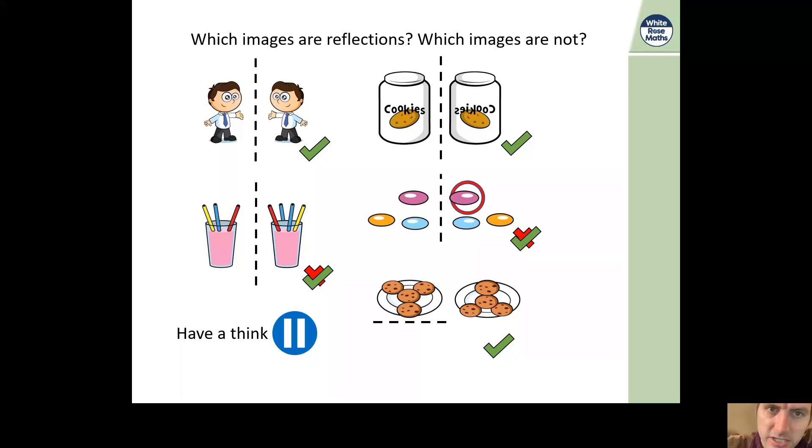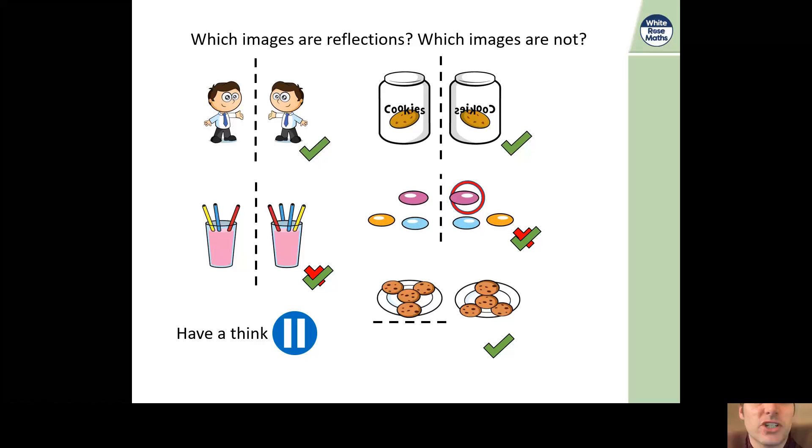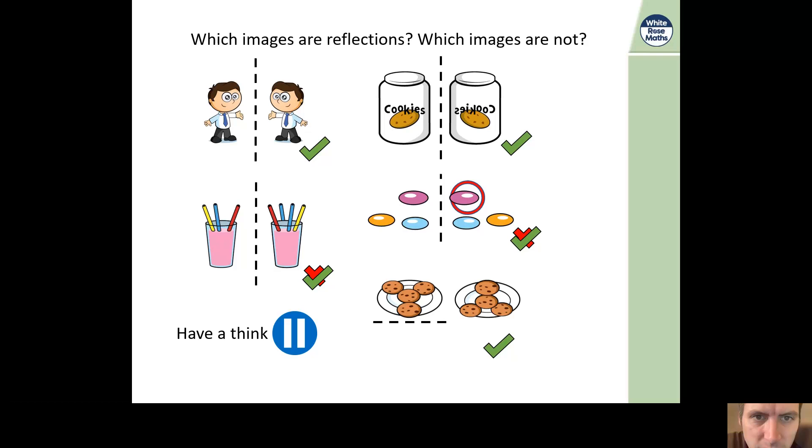Now, we've got some images which are reflections and some which are not. Whether Terry, whether the pens, the cookies, the Smarties, the cookie jars, or the cookies on plates. Which of these five are reflections and which are not? If you can figure out why as well, that'd be great. Pause it again, have a look at them, see which ones are reflections and which are not.